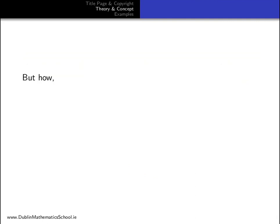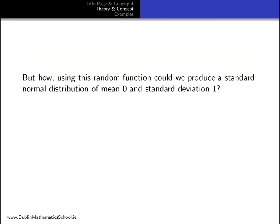But how, using this random function, could we produce a standard normal distribution of mean 0 and standard deviation 1? We use what is known as the Box-Muller transform.